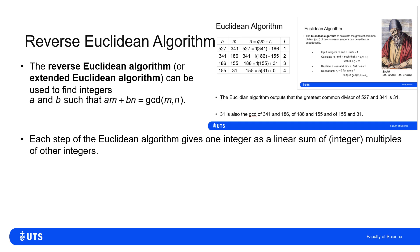It should be that I can reverse the steps of this calculation and get some multiple of 527 plus some multiple of 341 being equal to 31. Spotting that is not going to be easy without the algorithm.